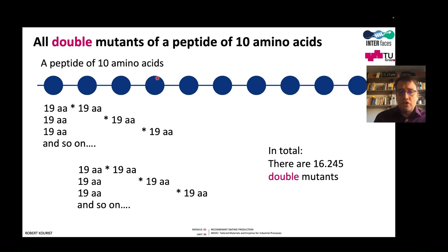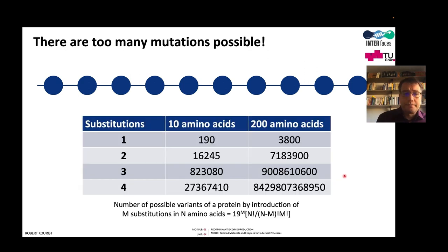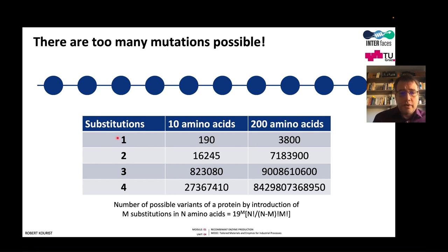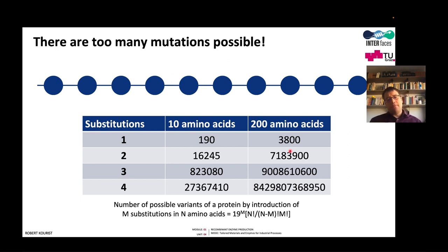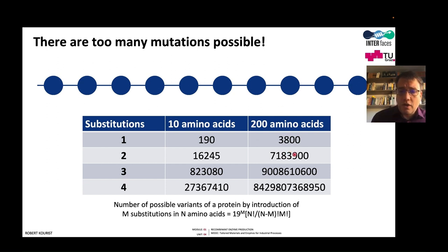If we go for a rational approach with targeted mutations, it is still a huge amount of work to create 16,000 variants by site-directed mutagenesis. For a 200 amino acid enzyme — a typical enzyme size — all single amino acid substitutions total 3,800. This is sometimes done and is called gene-wide saturation mutagenesis. The problem is that successful protein engineering studies usually require more than one mutation — sometimes 2 or 3, sometimes up to 10 or 20 amino acid mutations.